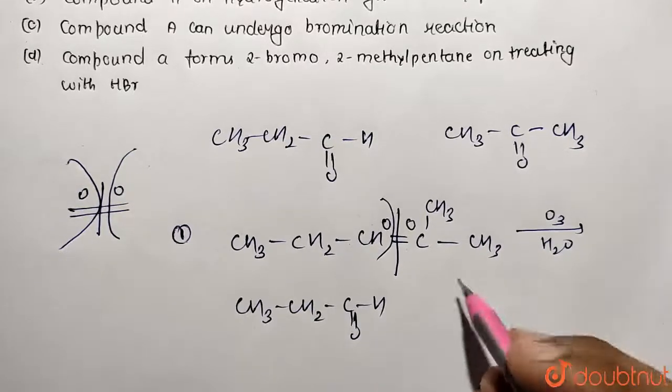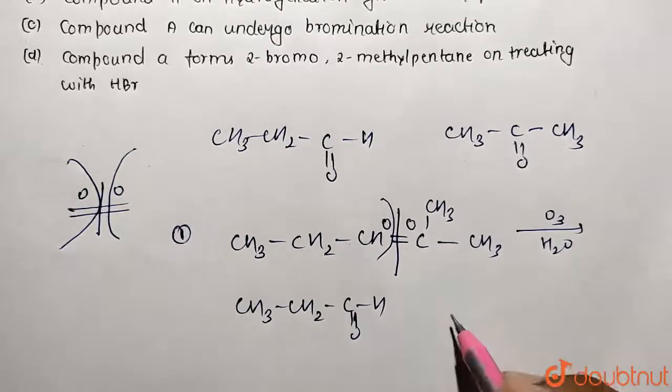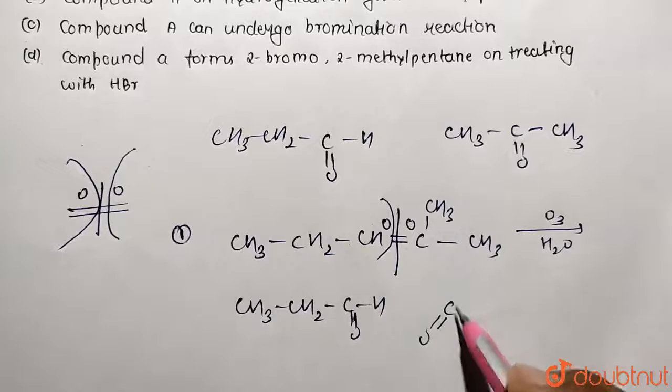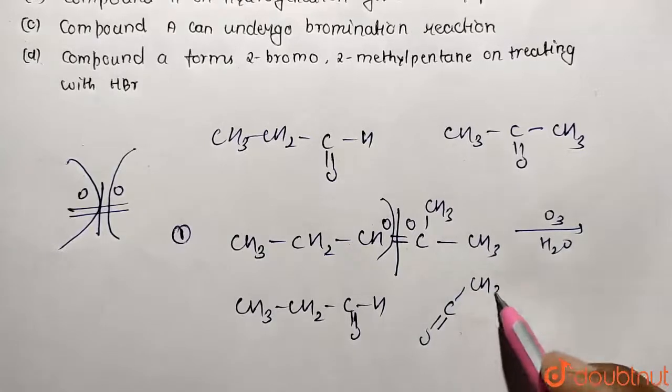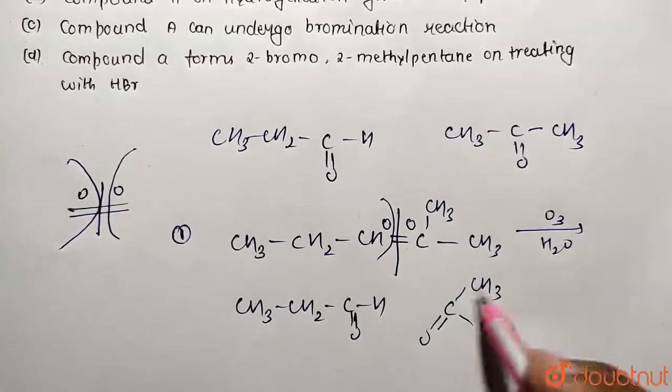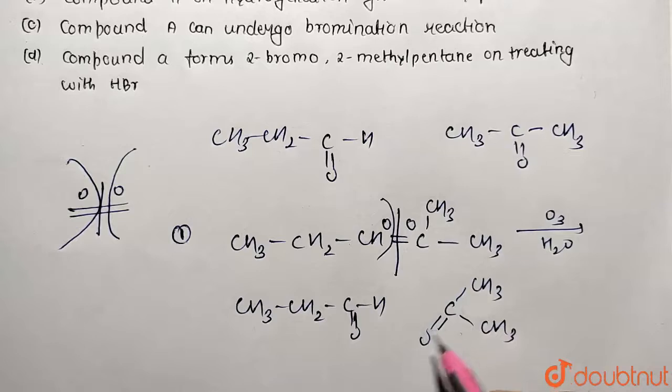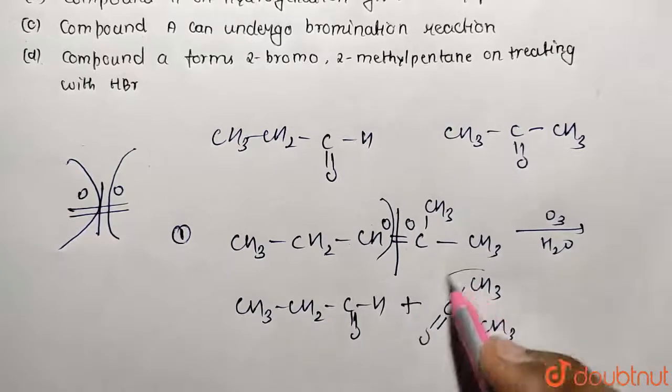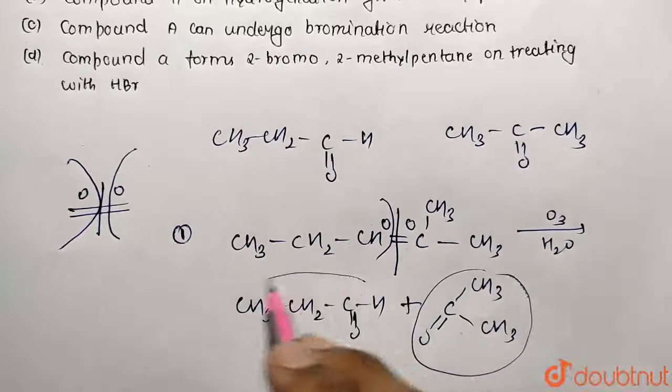Similarly, if you consider this is also going to be double bonded: C double bond O, and both sides we are having CH3 groups. It's going to be called propanone molecule. These are the two molecules obtained from the reaction.